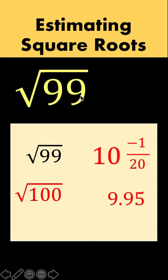And compare that with the calculator value of square root of 99, which is approximately 9.9498. And notice that these two values are very close with each other.